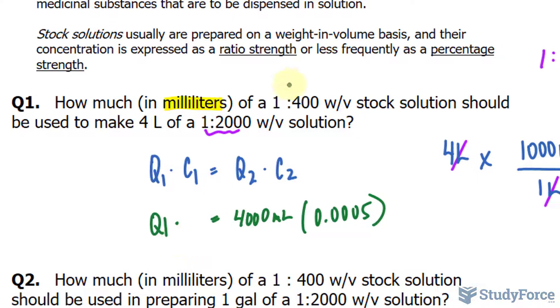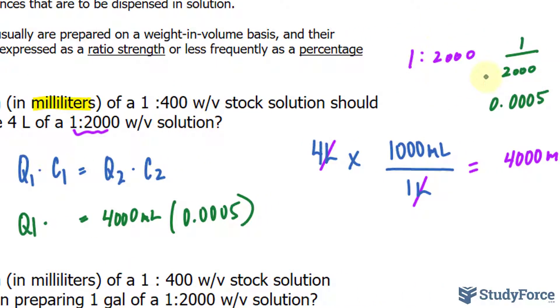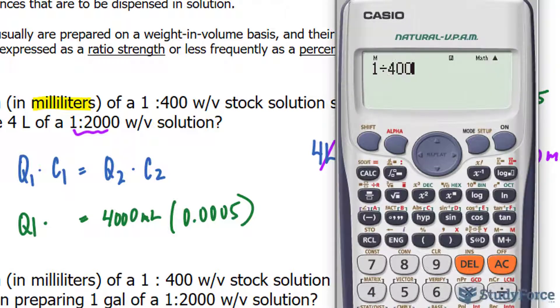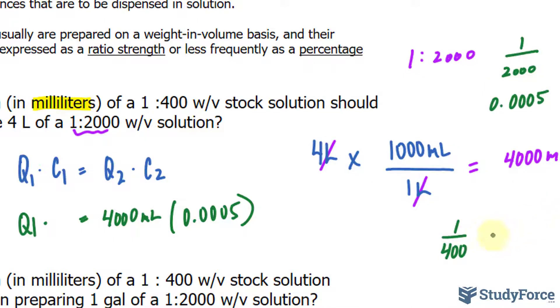And its concentration can be found using the same sort of idea as we did over here. 1 over 400, using our calculator, is equal to 2.5 times 10 to the power of negative 3, or in other words, 0.0025. I'll place this value in for C1.